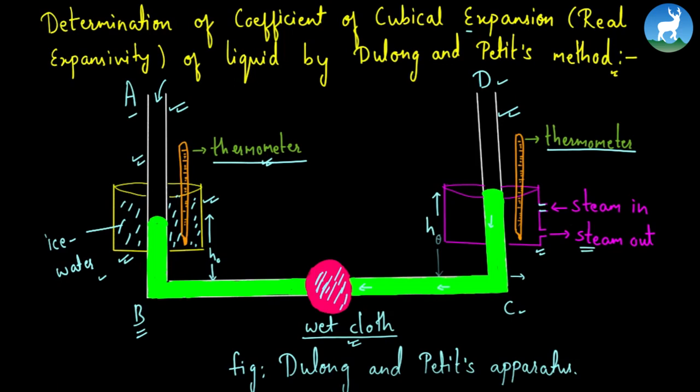You can see one side has ice water and the other has steam, so the temperature is different. This causes variation of the density with temperature.